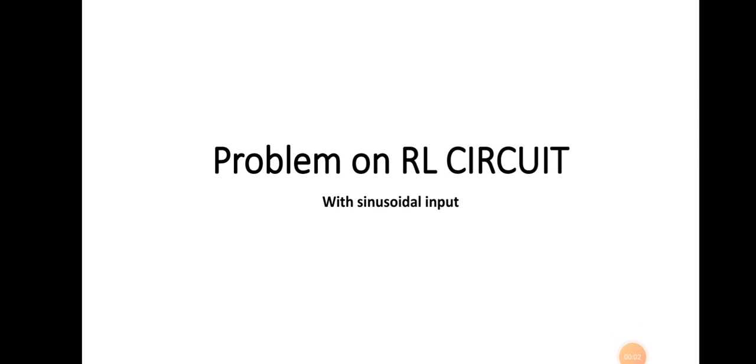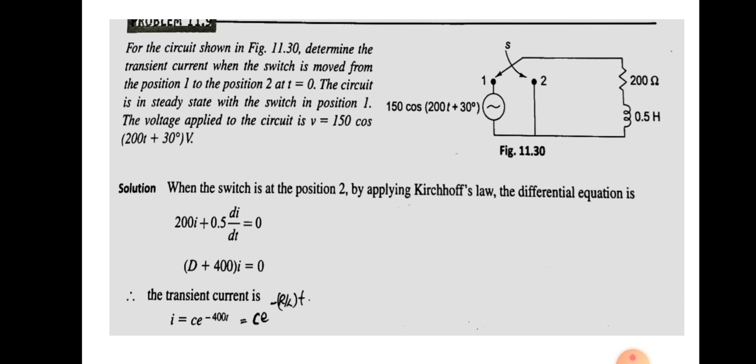In this session we will discuss a problem in RL circuit section with sinusoidal input. For the circuit shown in figure, determine the transient current when the switch is moved from position 1 to position 2 at t equal to 0. The circuit is in steady state with the switch in position 1. The voltage applied is V equal to 150 cos(200t + 30°) volts.